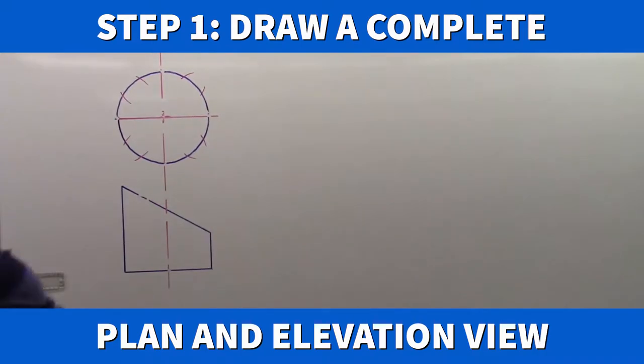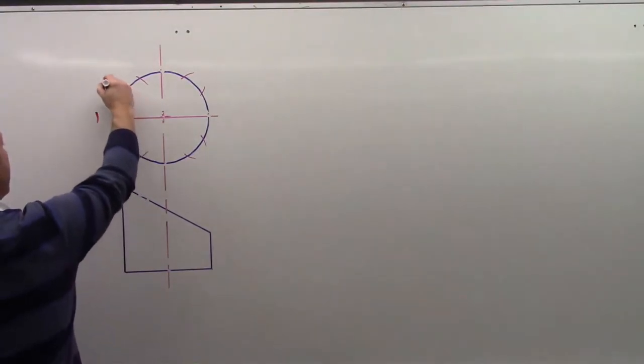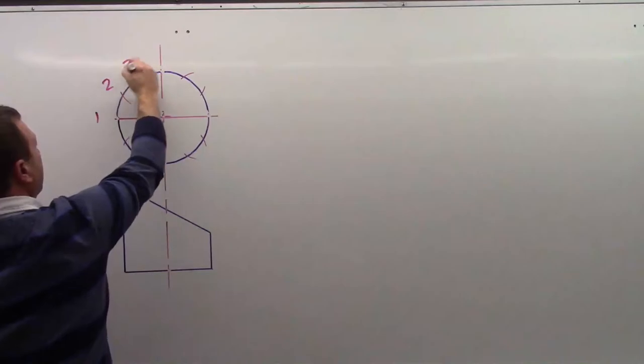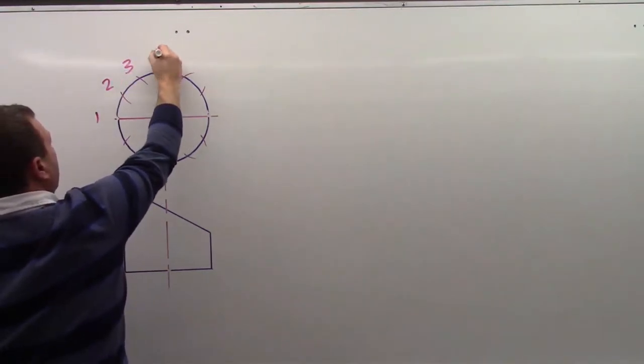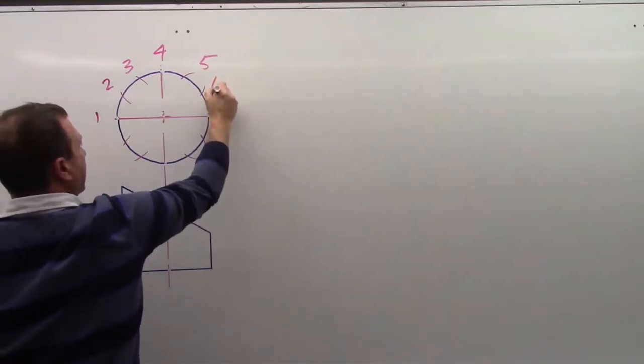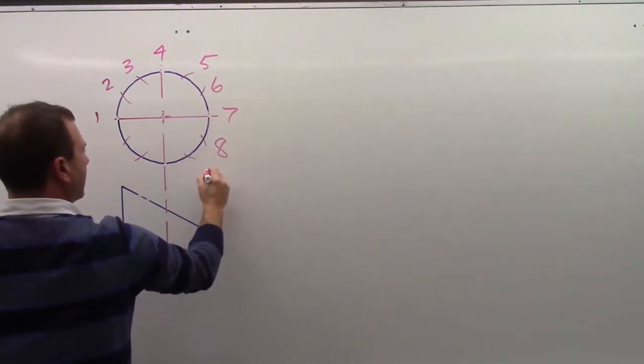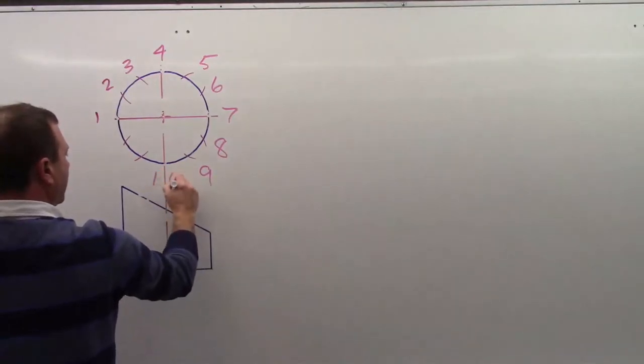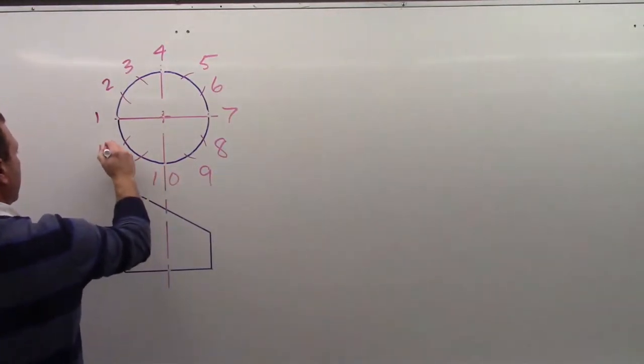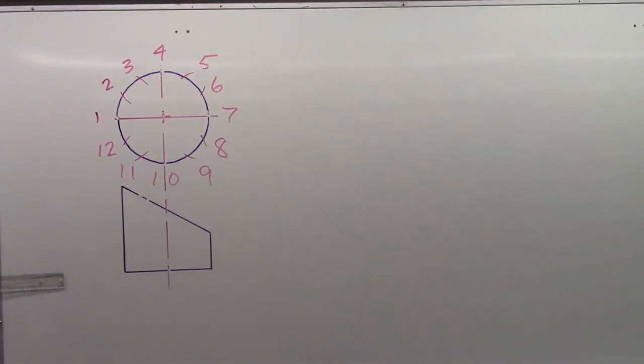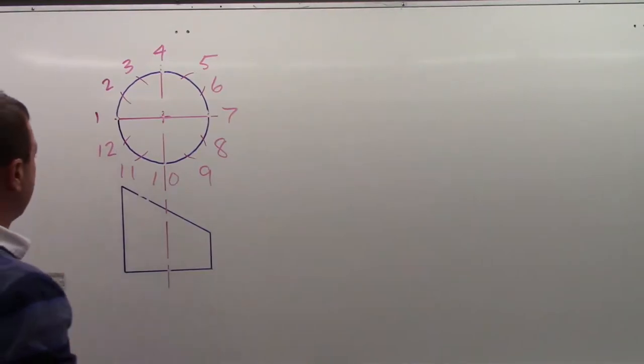We also want to put some numbers into our drawing so that we can follow it through. I'm going to start on the left-hand side and go all the way around. 12 equal divisions gives us 12 numbers all together.